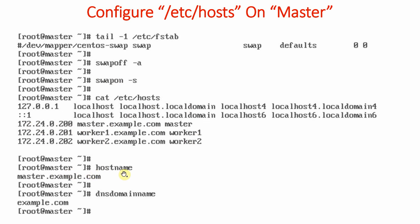Running the 'hostname' command will show master.example.com as the system name. You can also check the domain name with the 'dnsdomainname' command and will find 'example.com'. When implementing the cluster, naming should be proper and all systems should belong to one domain — in our case example.com, which is a domain anyone can use for demo purposes.